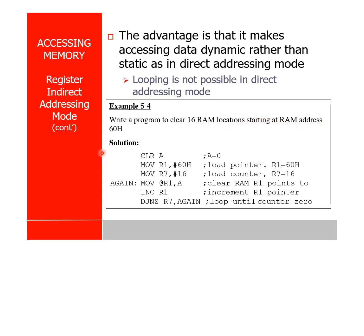Now another example: write a program to clear 16 RAM locations starting at 60H. CLR A — accumulator is now 0. MOV R1, #60H — R1 gets 60H. MOV R7, #16 — R7 is the counter.